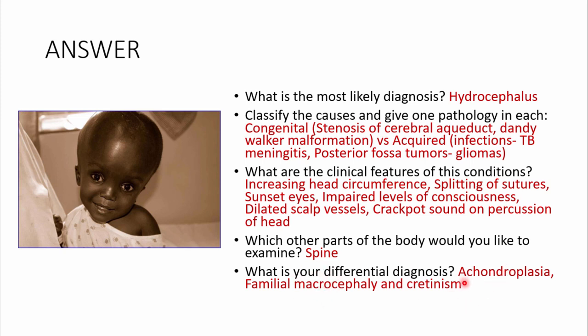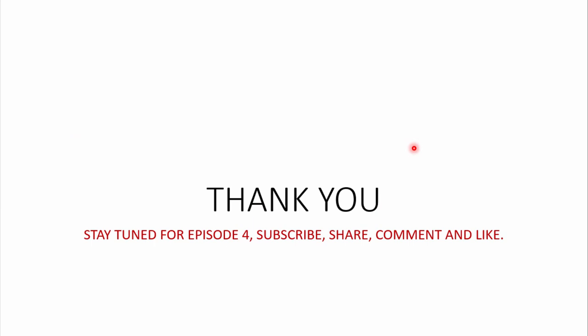Differential diagnosis includes achondroplasia, familial macrocephaly, or cretinism. Treatment: address the underlying cause — medical treatment for TB meningitis, surgical intervention for tumors. Shunting procedures include ventriculoperitoneal shunting, which diverts CSF from the ventricles to the peritoneal cavity, or ventriculopleural shunting. These procedures have their own complications, which will be covered in other episodes of this OSCE series. Thank you for listening — please stay tuned for Episode 4, subscribe, share, and drop a comment.